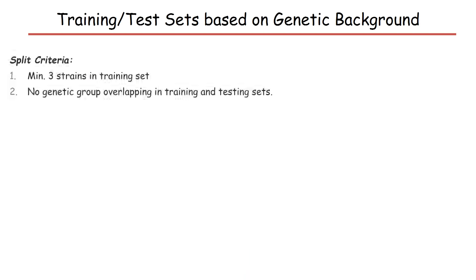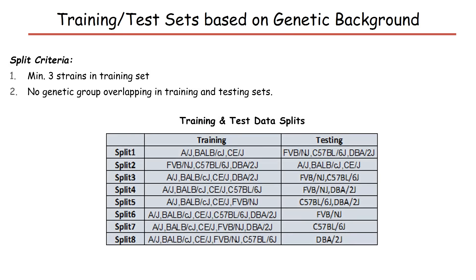We divide our dataset into training and test sets based on genetic background, using two split criteria: there should be samples from a minimum of three strains in the training set, and there should be no genetic group overlapping between training and test sets. With these criteria, there can be eight different training and testing splits. For example, split 1 has AJ, BALB/cJ, and C/EJ strains in the training set and the remaining three strains for the test set.